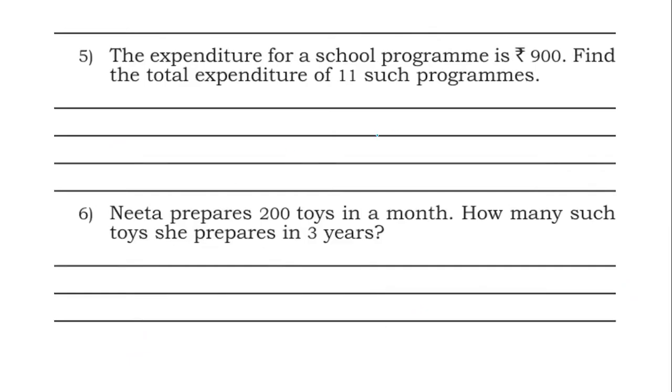The expenditure of a school program is 900 rupees. Find the total expenditure of 11 such programs. One program cost is 900 given. They are asking for 11 such programs, how much cost. Just multiply 900 into 11. 1 into 0 is 0, 1 into 0 is 0, 1 into 9 is 9. Plus 1 into 0 is 0, 1 into 0 is 0, 1 into 9 is 9. Add all these. 0, 0, 9 plus 0 is 9, 9. 11 programs.